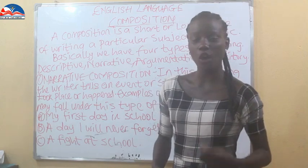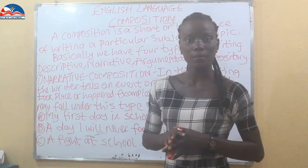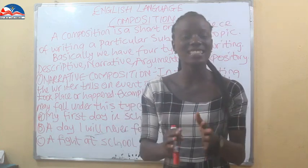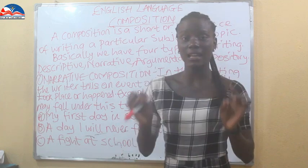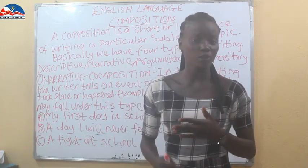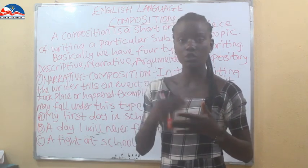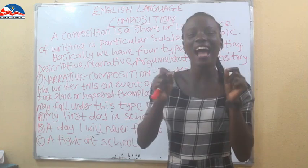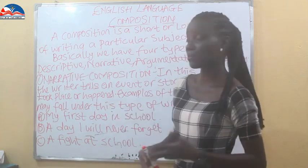Narrative composition tells us how an event or a story happened, and you are going to explain how it happened. Note that you might be asked a series of questions, but you should be able to differentiate narrative composition, descriptive composition, argumentative composition, and expository composition. Narrative composition deals with narrating an event or a story — how it occurred.